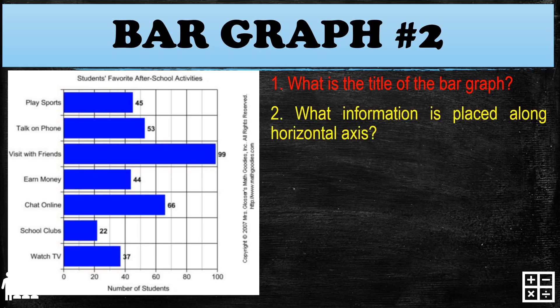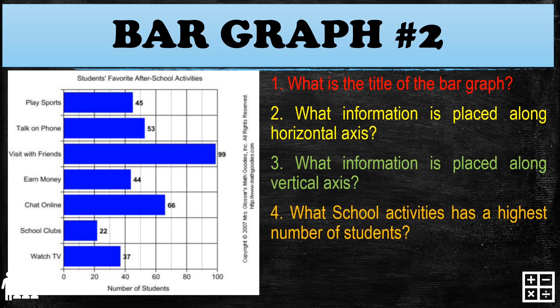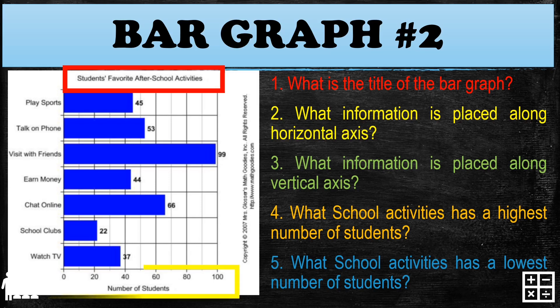I hope you learned from bar graph number one. Let's proceed to bar graph two. The guided questions are: What is the title of the bar graph? What information is placed along the horizontal axis? What information is placed along the vertical axis? What school activity has the highest number of students? And what school activity has the lowest number of students? For question one — can you guess the title? Very good! It's 'Students' Favorite After-School Activities.'